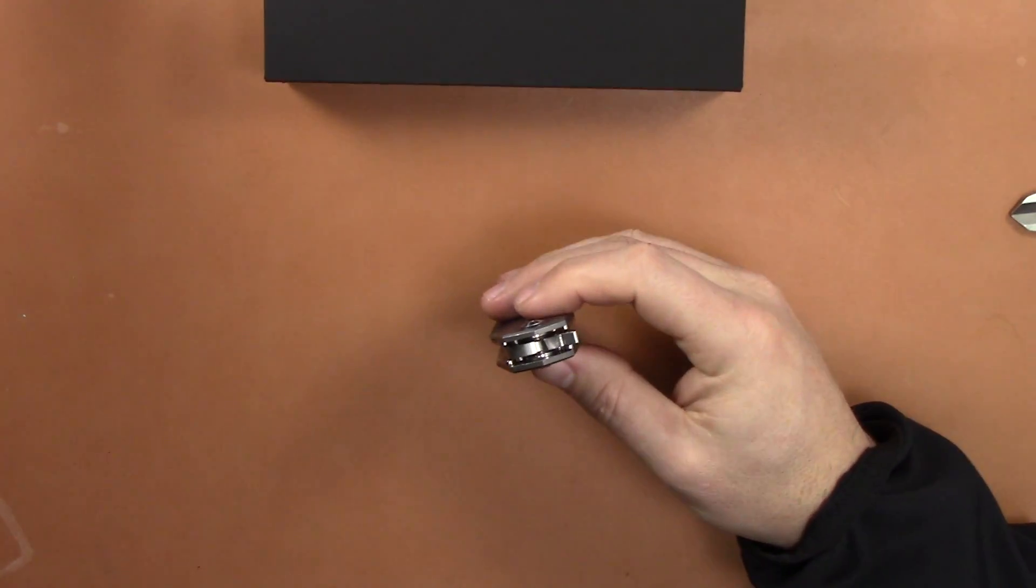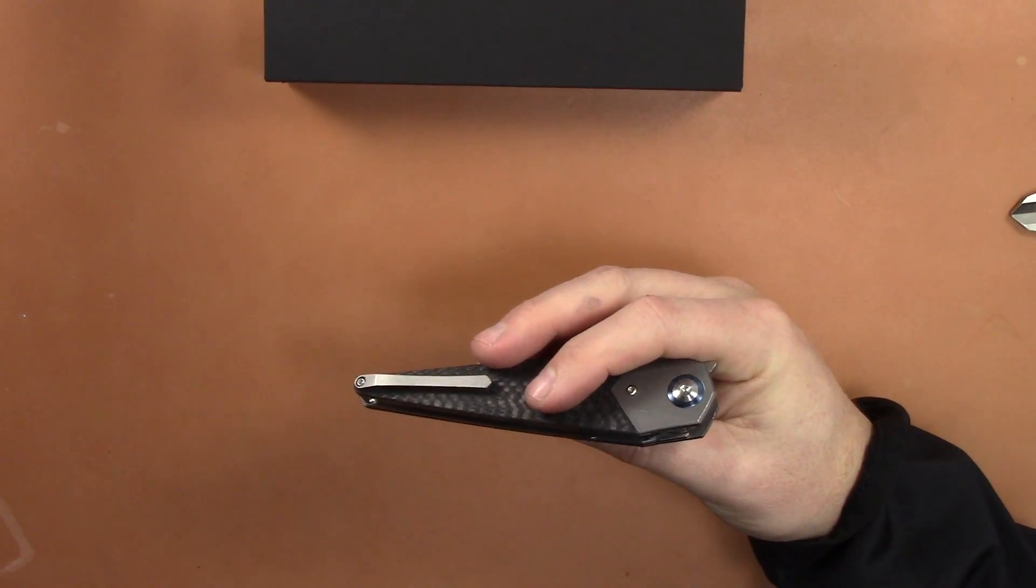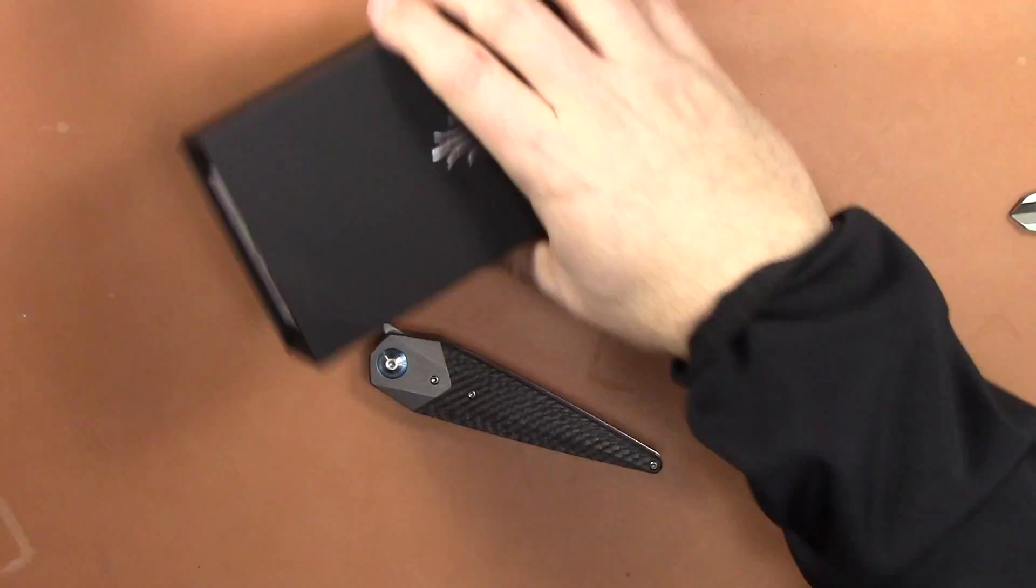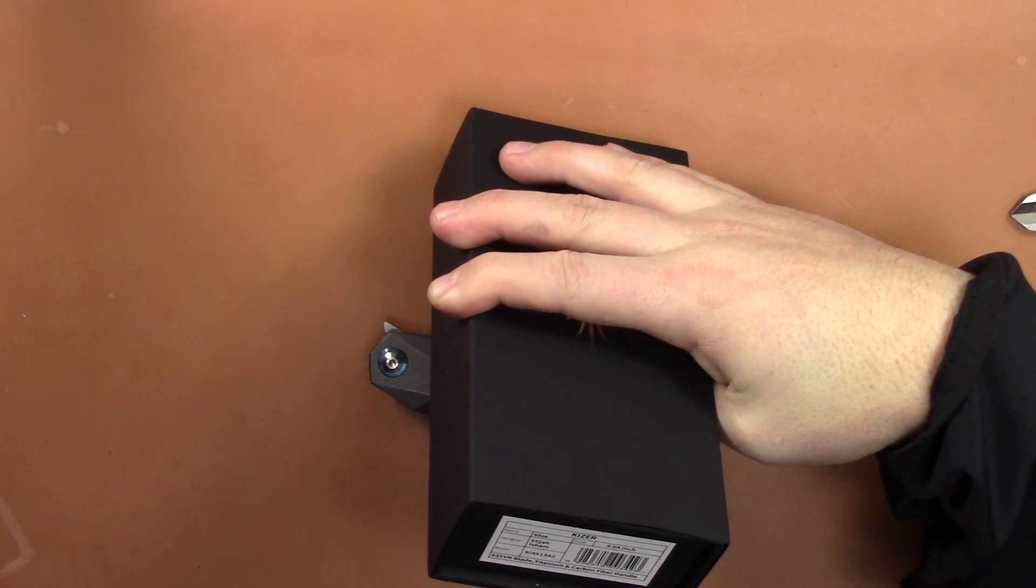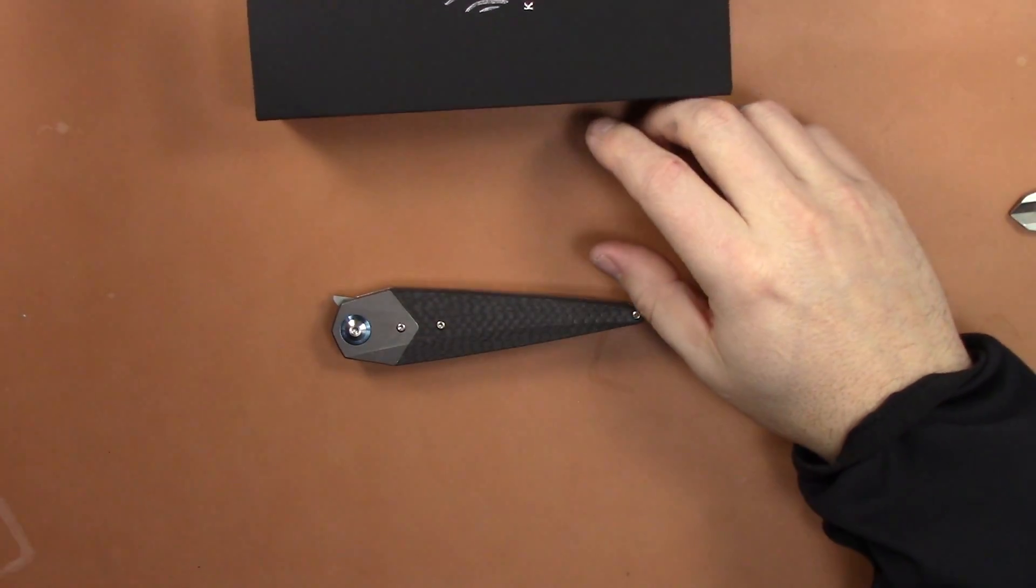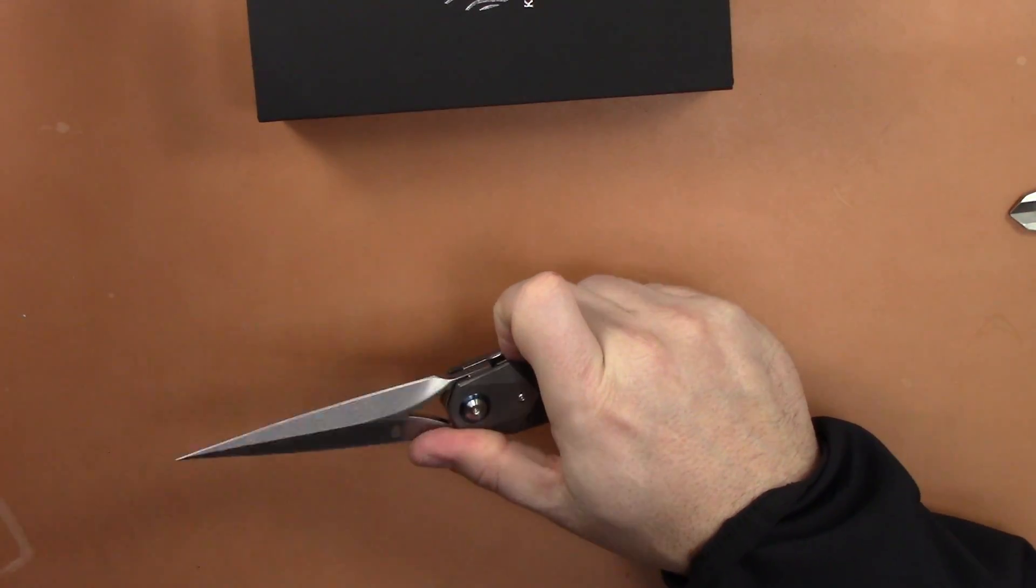The model number is actually KI 451382, but it's called the Soze. You can get this in carbon fiber titanium or just titanium, and this runs about 189 at Blade HQ and multiple retailers.